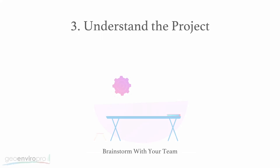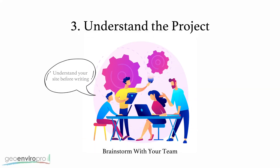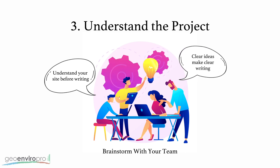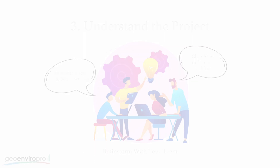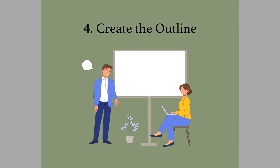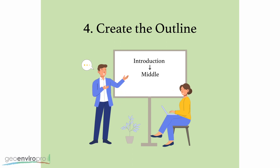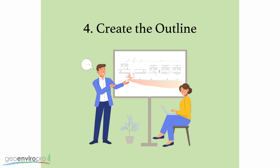Step 3: Understand the project. Brainstorm with the team to identify the key features of your project and how to convey this information clearly. Step 4: Create the outline. Prepare a pre-draft annotated outline that includes key points to cover and potential figures and tables that could be included in the report.